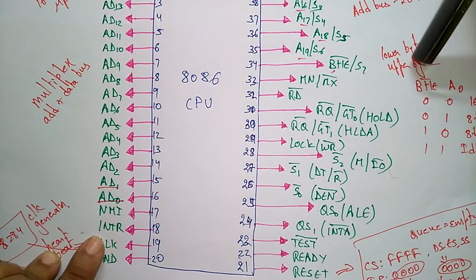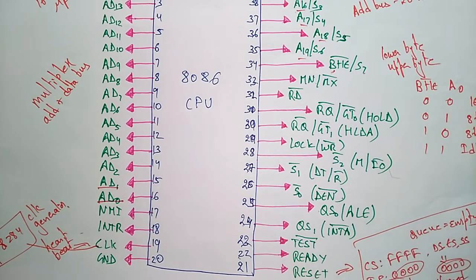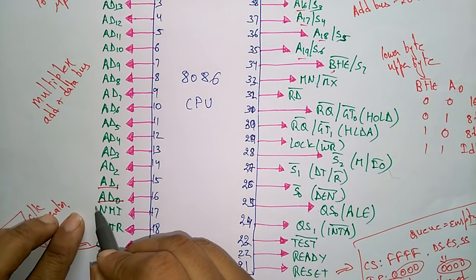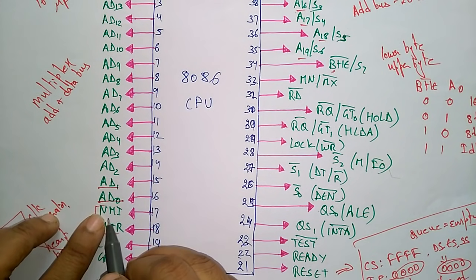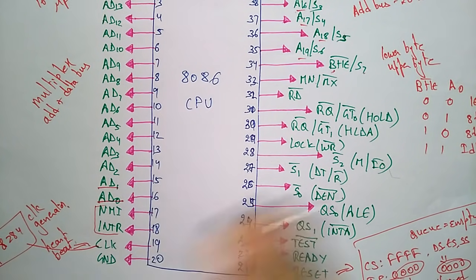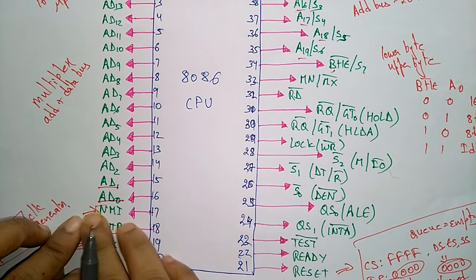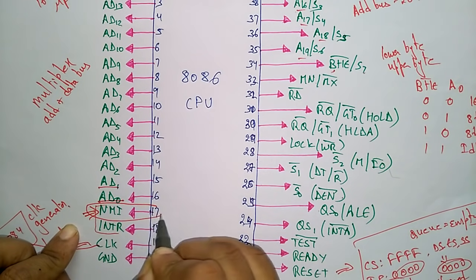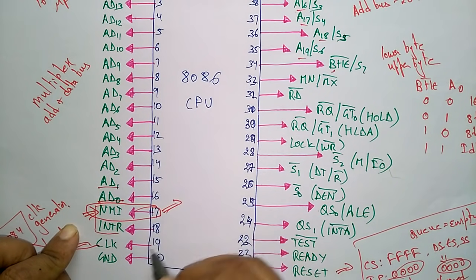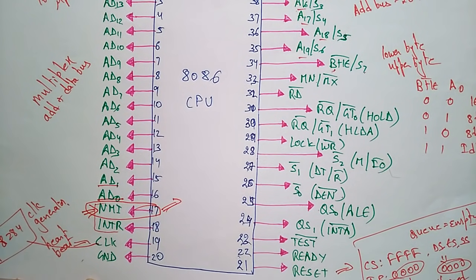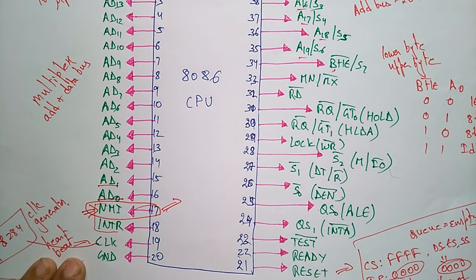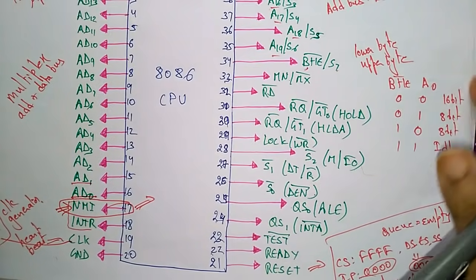NMI is the Non-Maskable Interrupt and INTR is the regular interrupt signal — this pin becomes active when an interrupt occurs. The NMI has the highest priority: you cannot mask or discard it, so the processor must execute the NMI request first before servicing the INTR signal.